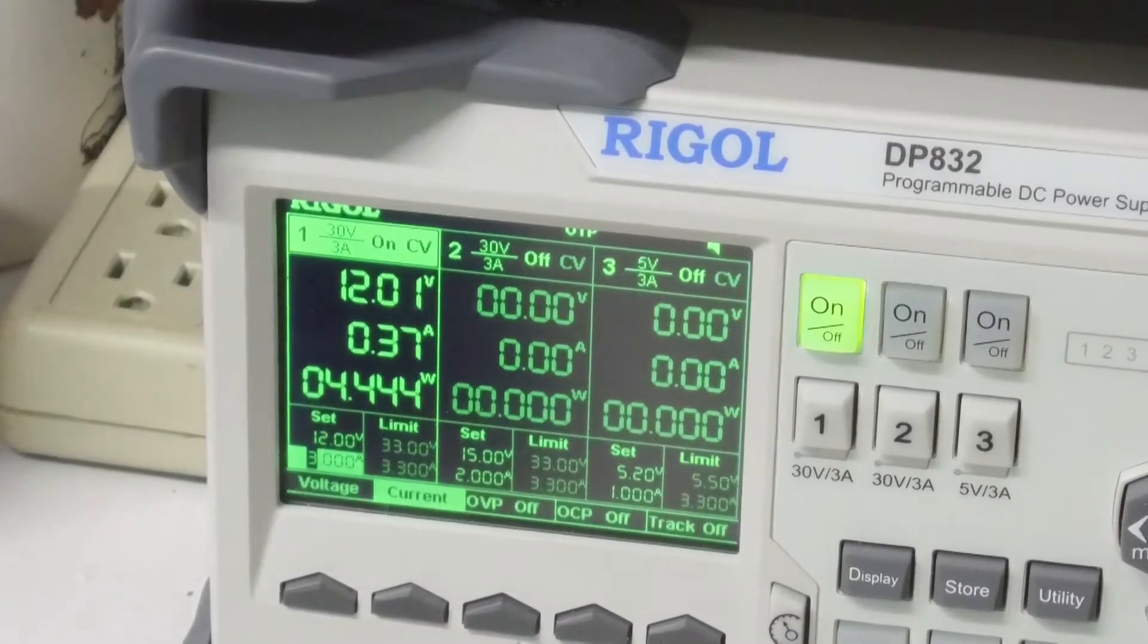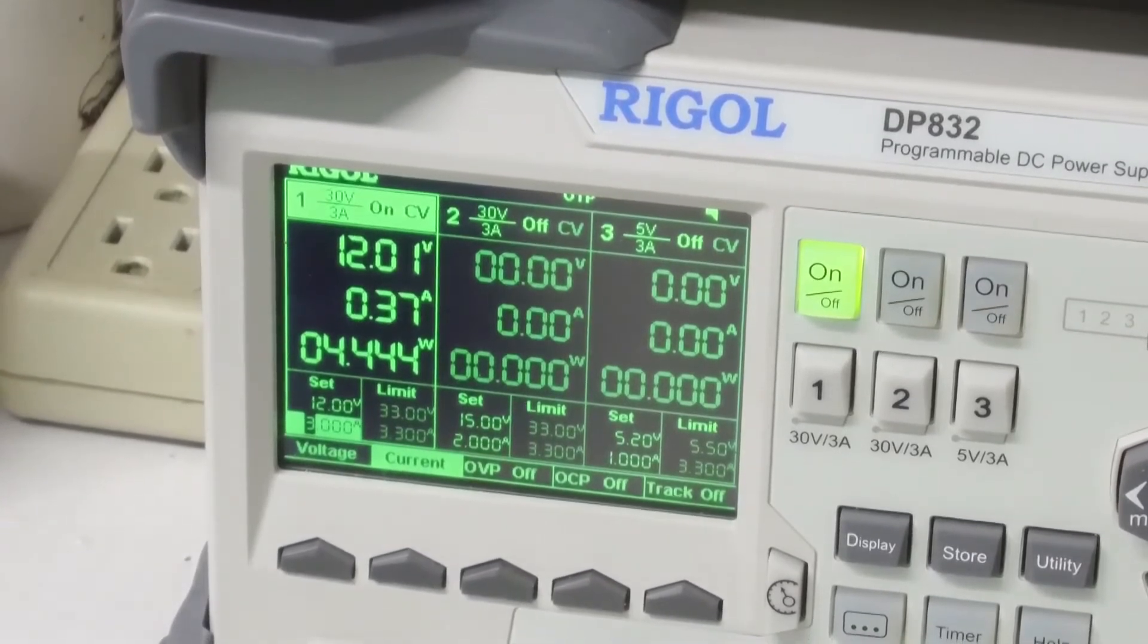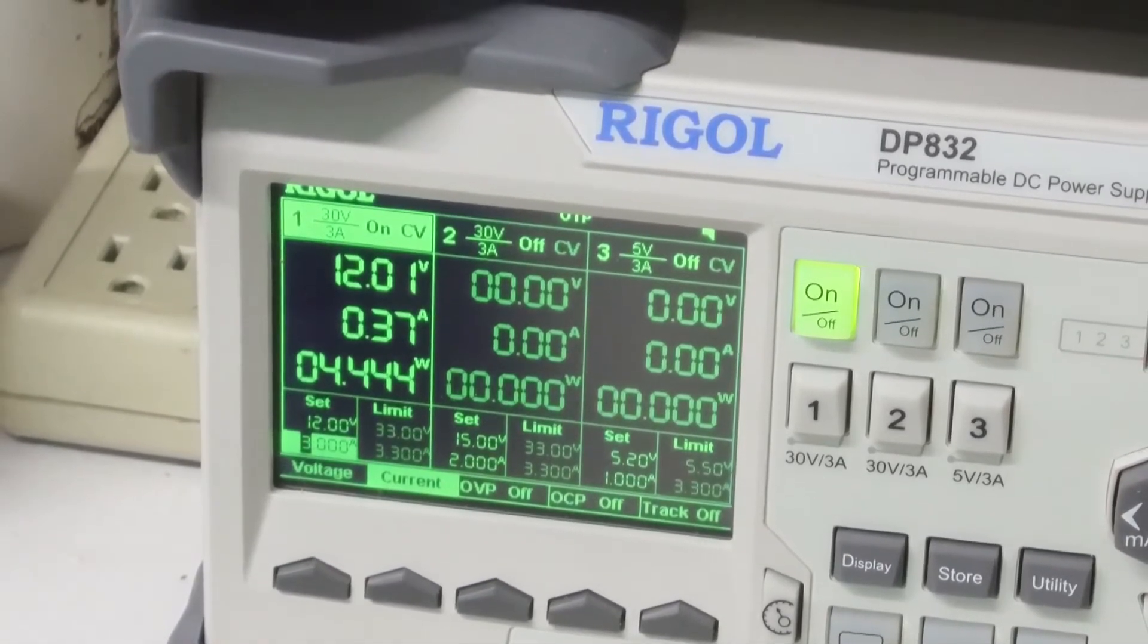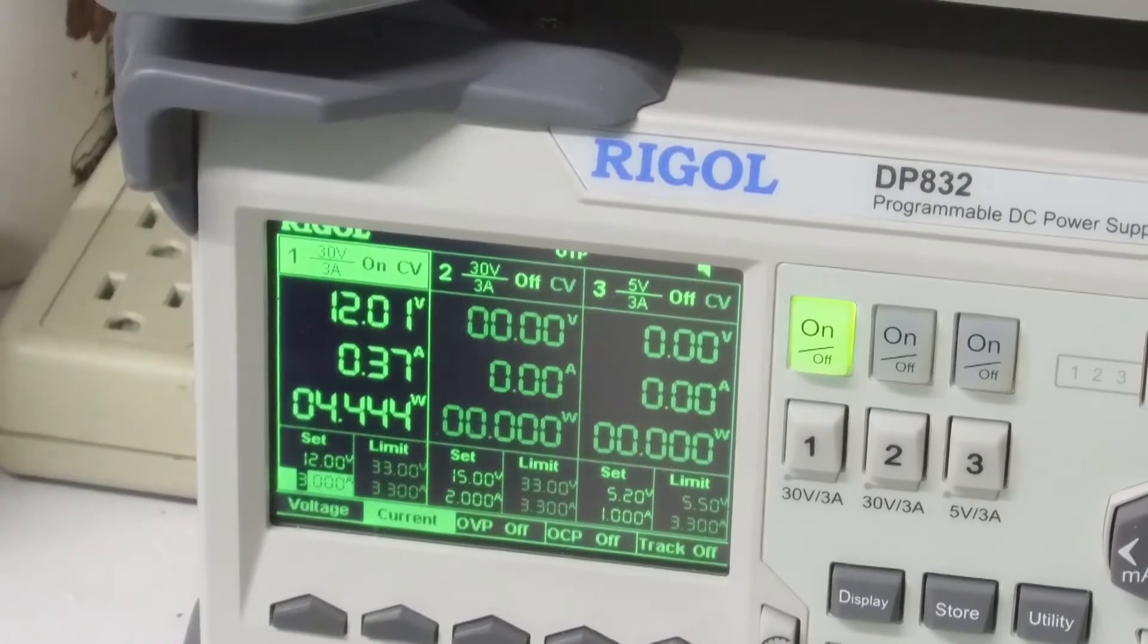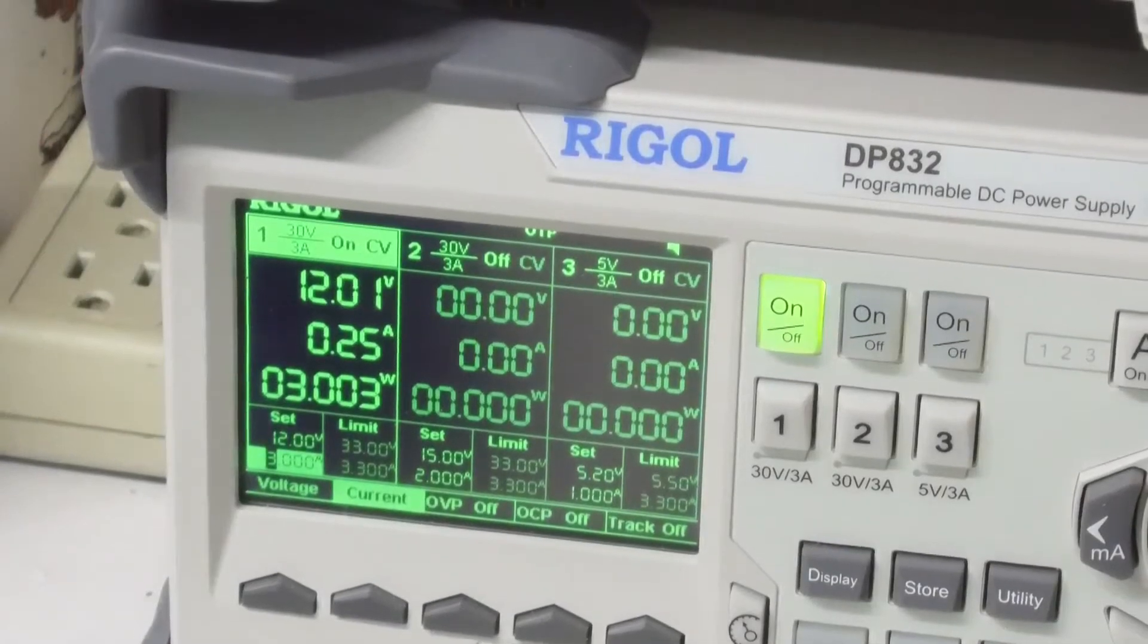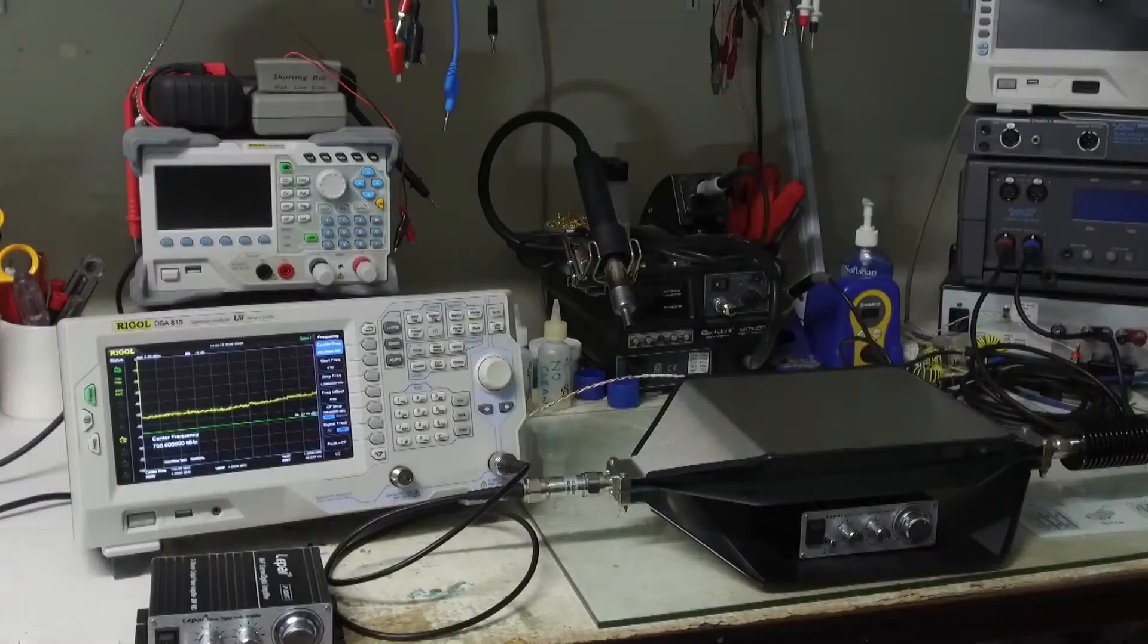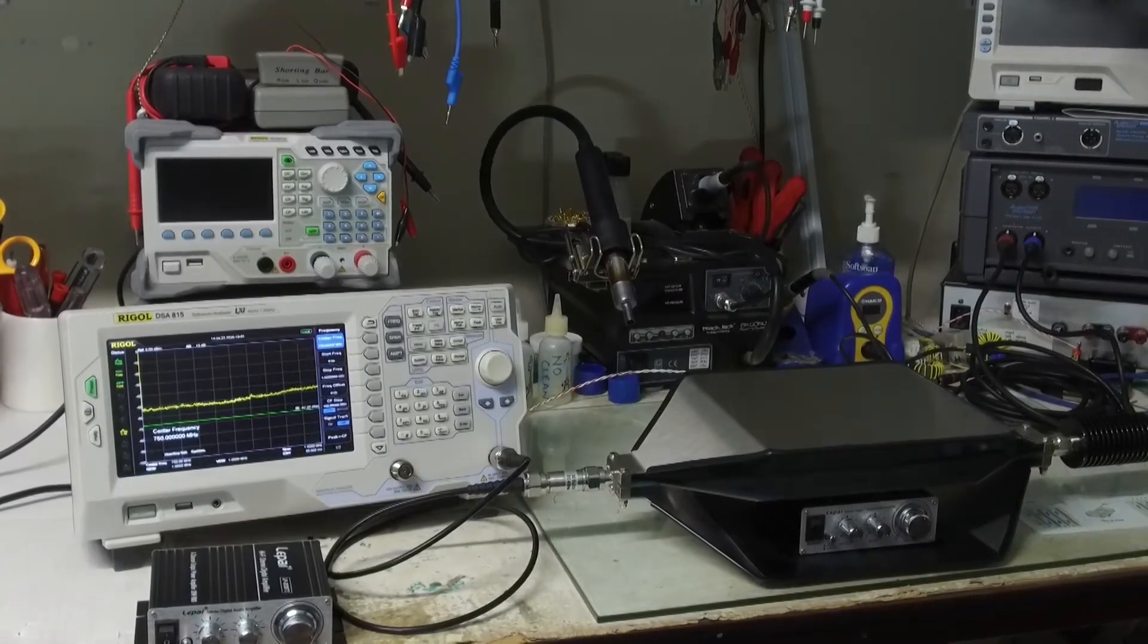Here's how much power we're supplying the TriPath amplifier when we are driving one watt on each channel. We have a 4.4 watt average input, so roughly 2.4 watts is being burned up in the inefficiency of the TriPath part. Same conditions but with the Texas instrument part, we are supplying 3 watts to get 2 watts out.